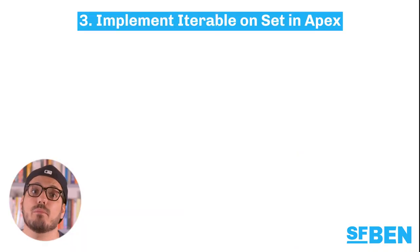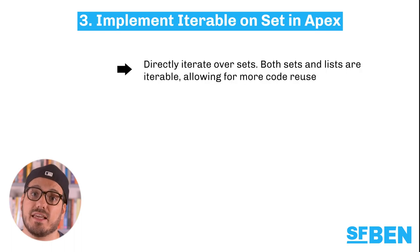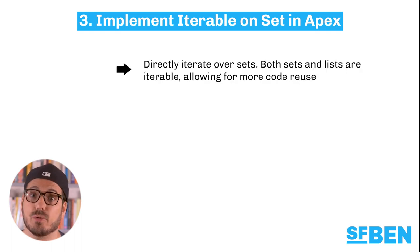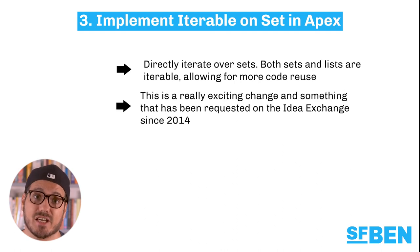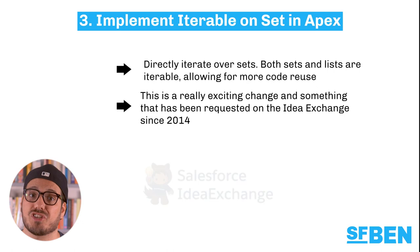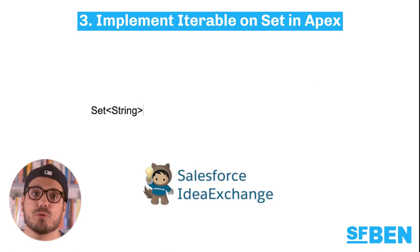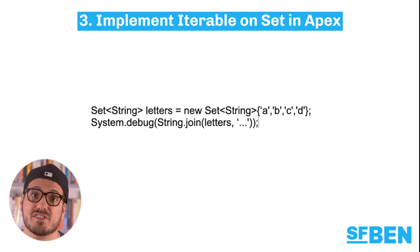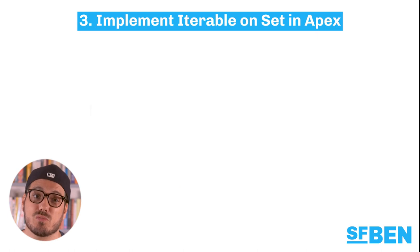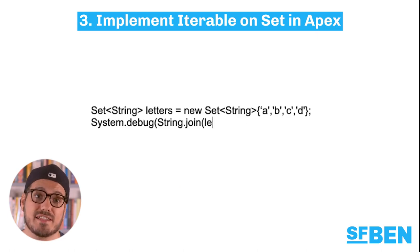The Set class now implements the Iterable interface, so you can directly iterate over sets. Both sets and lists are iterable, allowing for more code reuse. This is a really exciting change and something that has been requested on the Idea Exchange since 2014. Here is an example using the String.join method with a set, which was previously unsupported because Set didn't implement Iterable.